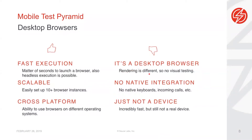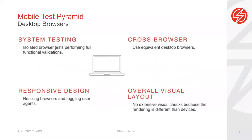The rendering is different so you can't rely on visual testing. There's no native integration, meaning you can't use keyboards or test incoming calls, which has nothing to do with the mobile device itself. What you can do with desktop browsers is system testing using isolated browsers for full functional validations, responsive design testing, cross-browser testing, and overall visual layout testing.